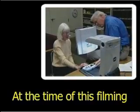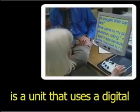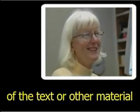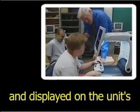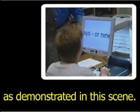At the time of this filming, the most recent development in video magnification systems is a unit that uses a digital camera to take a picture of the text or other material placed under the camera. The image is then enlarged and displayed on the unit's flat panel LCD monitor, as demonstrated in this scene.